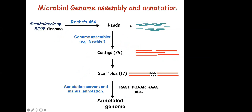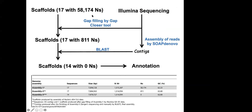I got the reads and assembled them into 79 contigs. We knew this bacterium has three chromosomes and three plasmids, so ideally we would expect around six contigs, but the assembly process left gaps. Using paired-end read information, I assembled those contigs into 17 scaffolds — closer to the expected six. In those 17 scaffolds, we had more than 58,000 Ns, which represent gaps in the sequence.